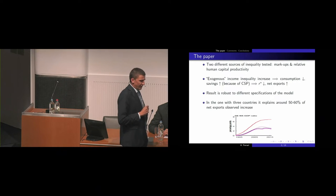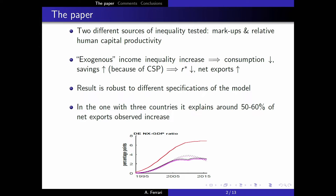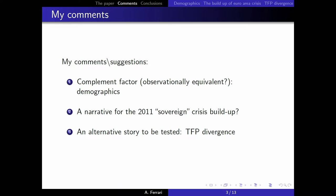The result is robust to different specifications of the model, and in the three-country specification that Ansgar presented, it is able to explain around 50–60% of the net export surplus observed in the last decade. My comments and suggestions: first, there is a possible complementary or alternative story that is almost observationally equivalent unless we find a variable over which the two stories can differ — that is demographics. Second, the paper can be a very nice narrative to introduce and look at the imbalances that drove the euro area to the 2011 sovereign crisis. And finally, there is an alternative story involving TFP divergence across the euro area that should be tested in the model.